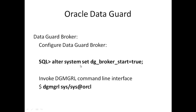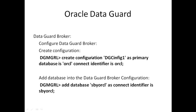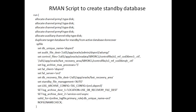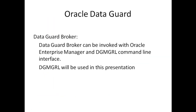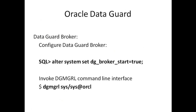This is the system parameter: you can set DG_BROKER_START equal to true and you can invoke the DGMGRL command from any of the databases, any of the servers. Then you can create a configuration - create configuration DG, etc. We will add the primary database and we will add the standby database, and then we will switch over from primary to standby database.